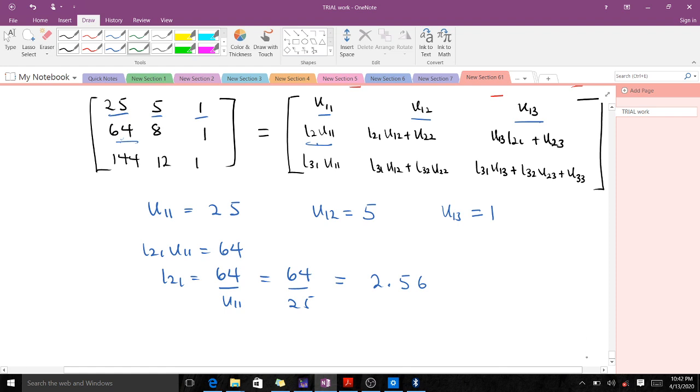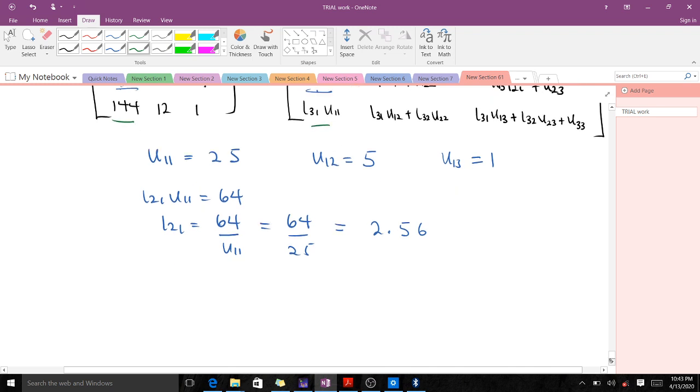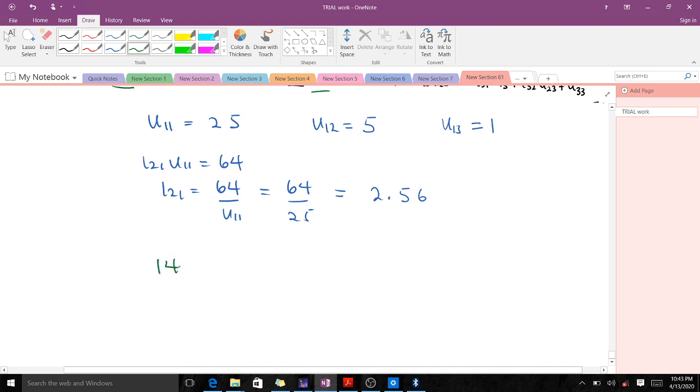When it comes to the second one, we can compare this and this. It means that 144 is equal to L31 times U11. So L31 is equal to 144 over U11, which is 144 over 2.5, and which gives us 5.76. We found 5 now, left with 4. So it becomes so simple.